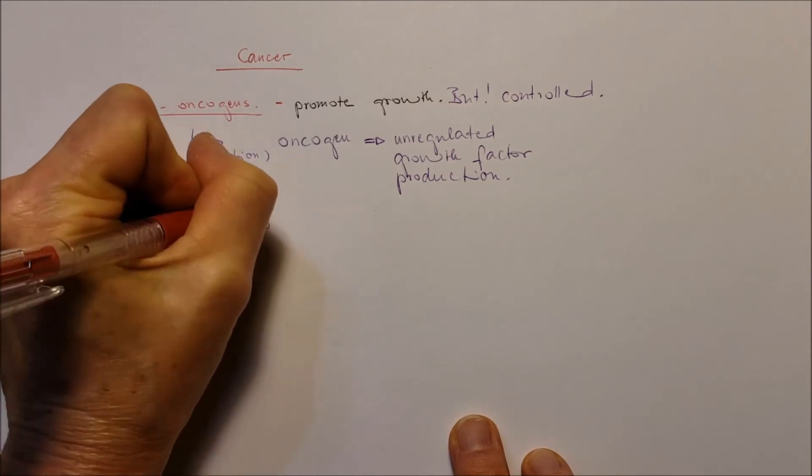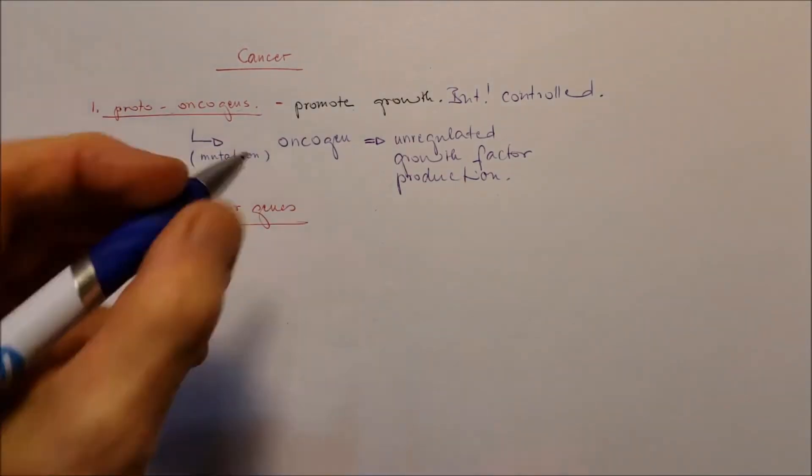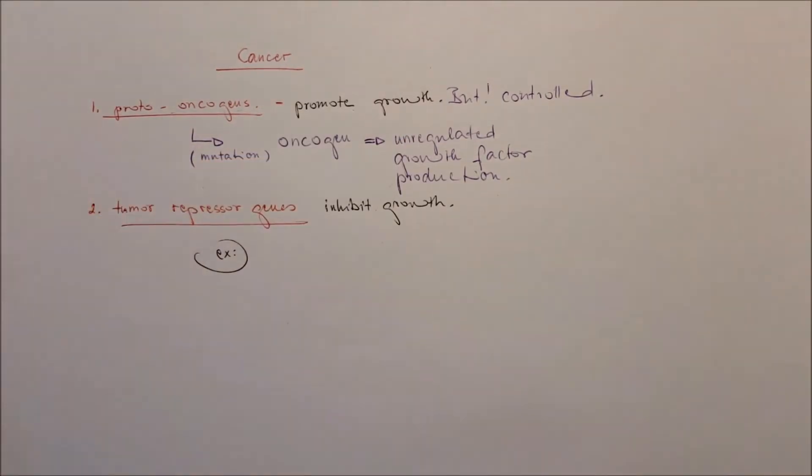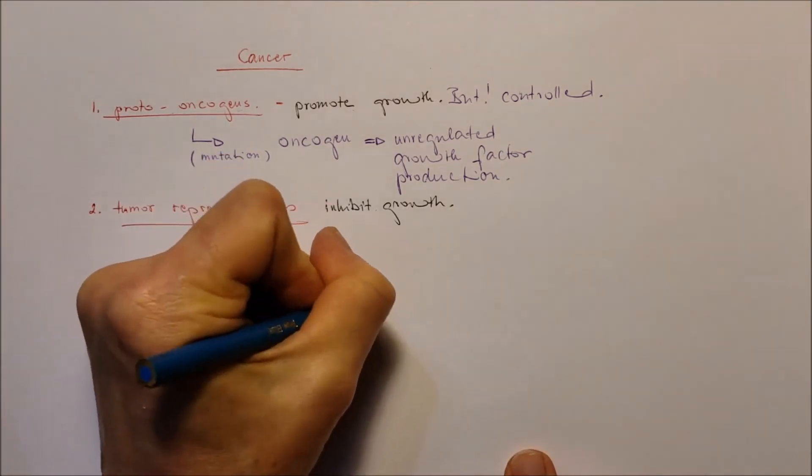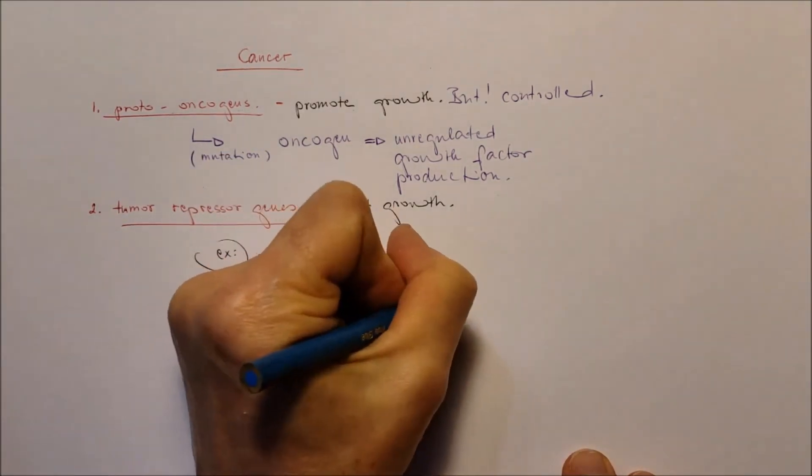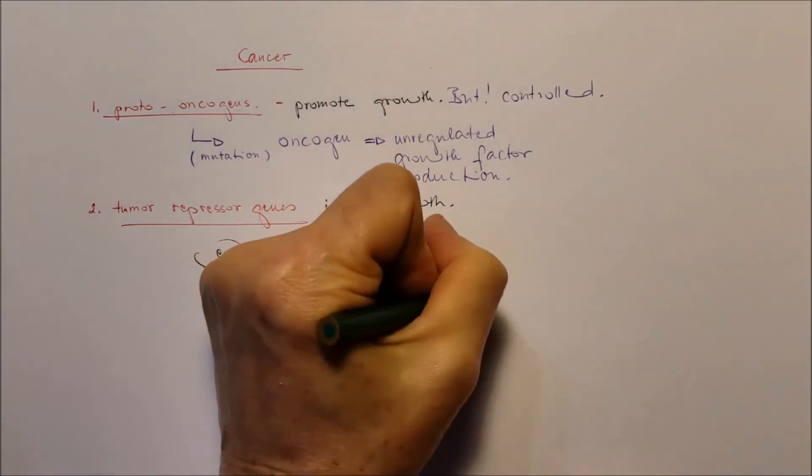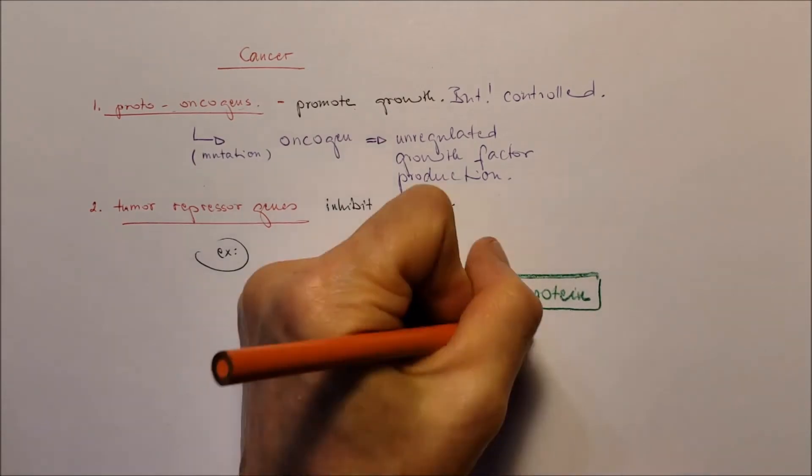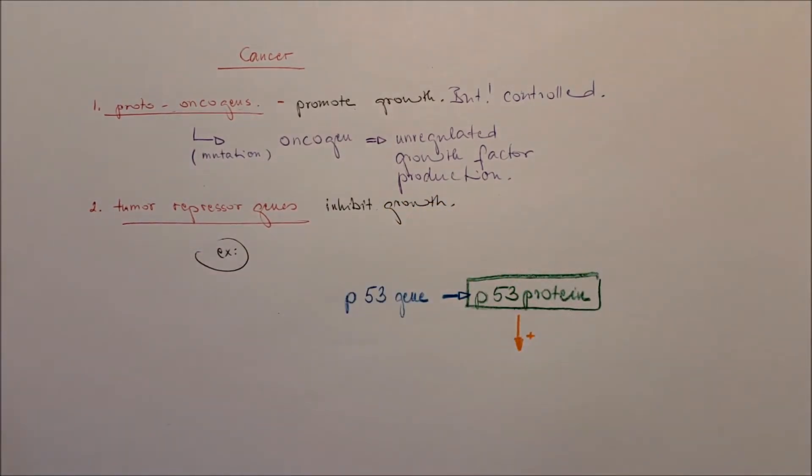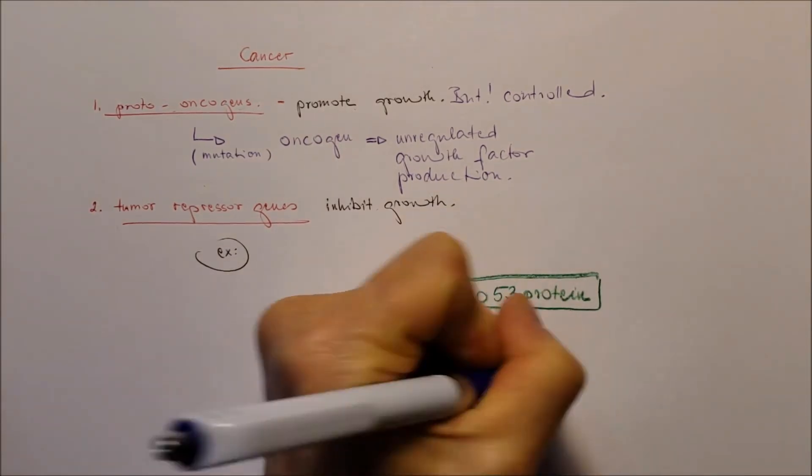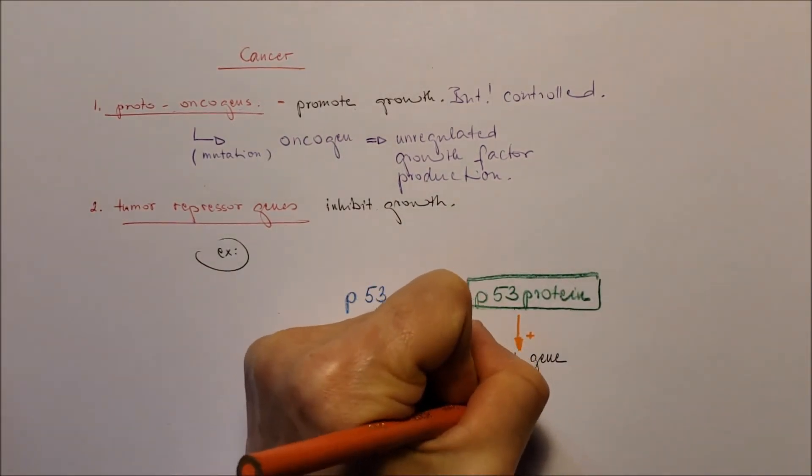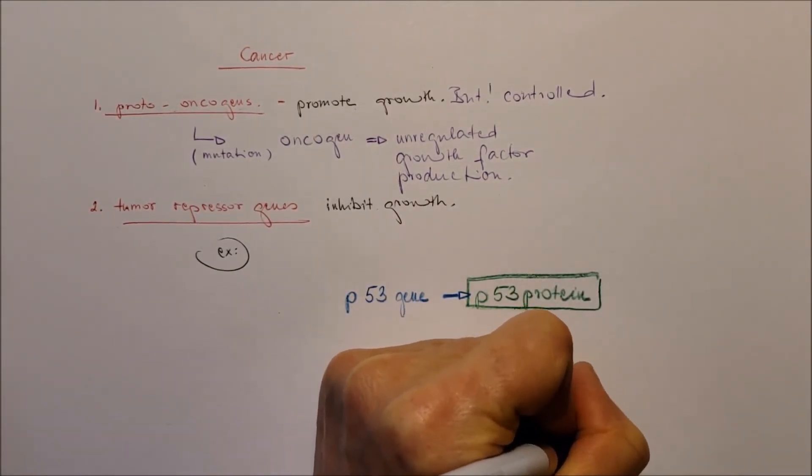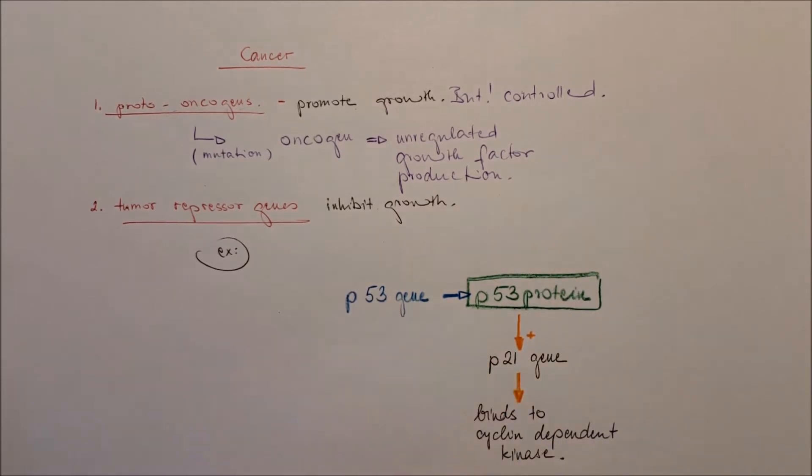The other one is tumor suppressor gene. There are several of them in the body. They inhibit growth, they slow down the cell cycle. An example for that is the p53 gene that produces p53 protein. This p53 protein has many functions. For example, it will activate the p21 gene that produces a protein that binds to the cyclin-dependent kinase that promotes cell cycle.